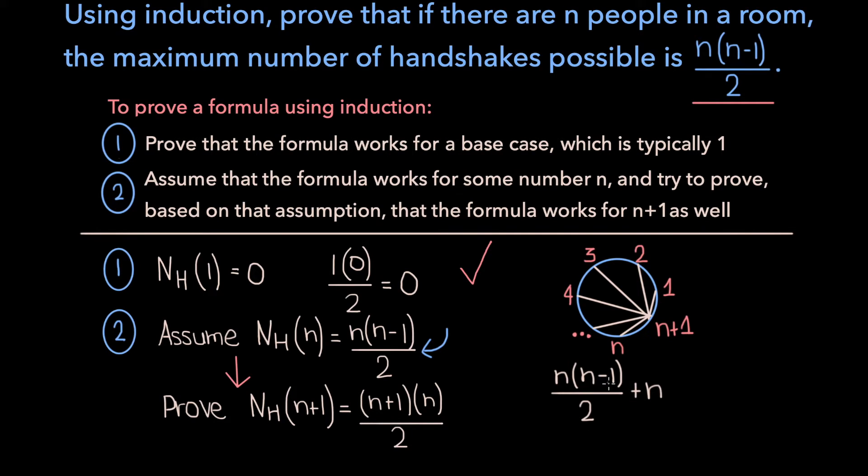Now once again, what this sum represents is the number of handshakes possible in a room of n+1 people. And so now essentially all that's left to do is to prove that these two expressions are the same.